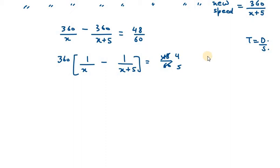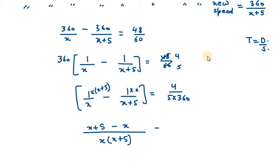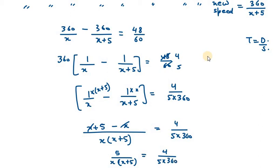Bringing 360 to the right side as a denominator gives 1 over x(x plus 5) equals 4 over (5 times 360). Multiplying the left side — x plus 5 minus x over x(x plus 5) — simplifies to 5 over x(x plus 5) equals 4 over (5 times 360).